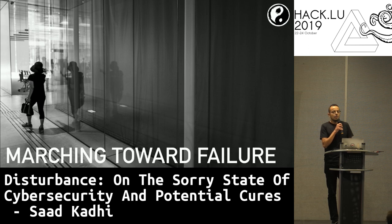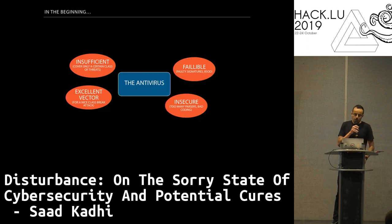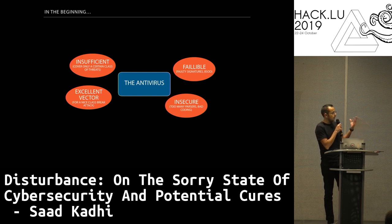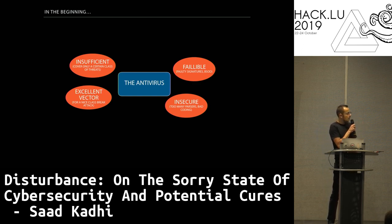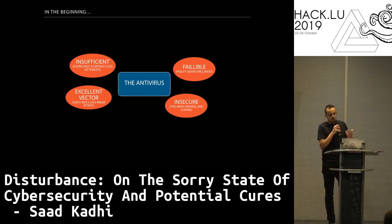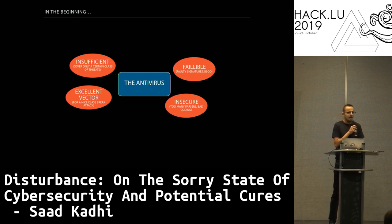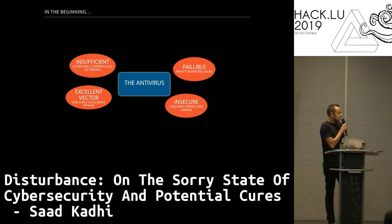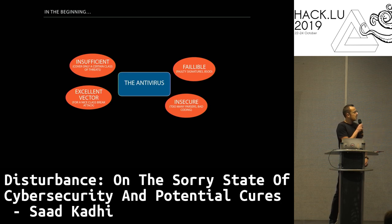Let's continue our march toward failure. As I said, we had in the beginning the antivirus — fallible, with faulty signatures, sometimes causing BSODs, insecure because too many parsers, bad coding. It's also an excellent vector for a class break. And of course insufficient — it covers only a certain class of threats. With growing digitalization comes product proliferation, and we end up with a cybersecurity product zoo.